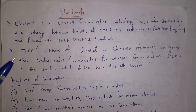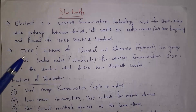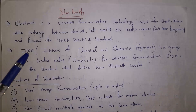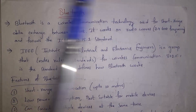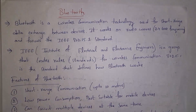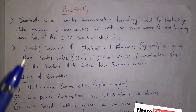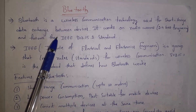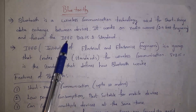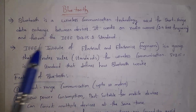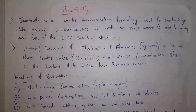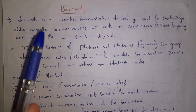Next I will explain what is Bluetooth. Bluetooth is a wireless communication technology — by using Bluetooth we can transfer files from one device to another. Bluetooth is used for shorter-range data exchange between devices. Data is transferred in the form of radio waves with a frequency range of 2.4 GHz. Bluetooth follows the standard IEEE 802.15.1, where IEEE stands for Institute of Electrical and Electronics Engineers.